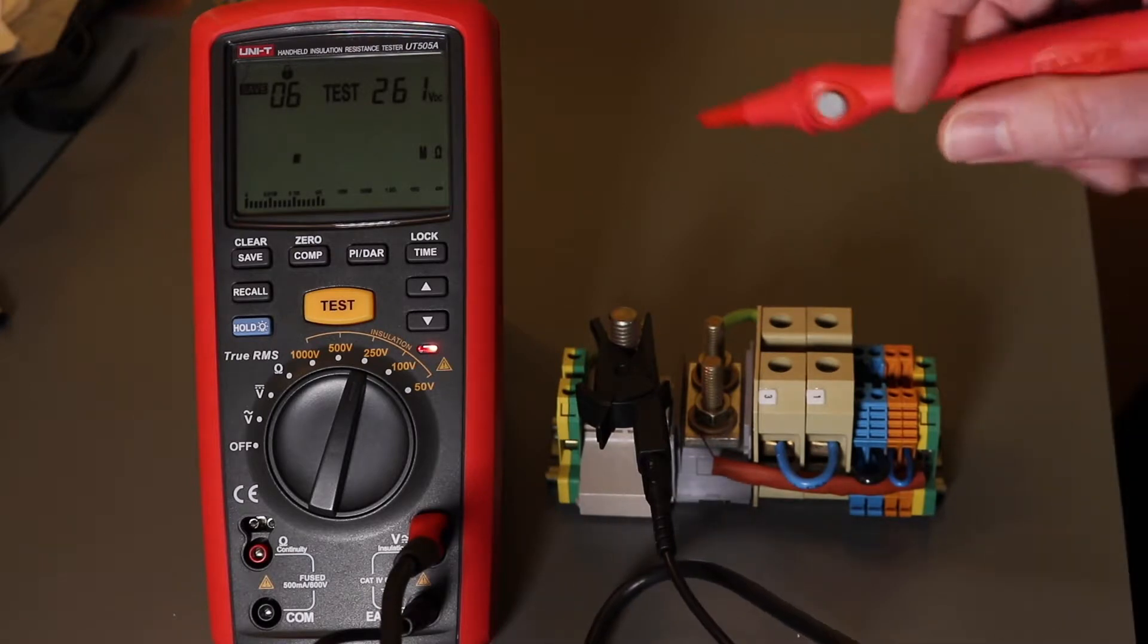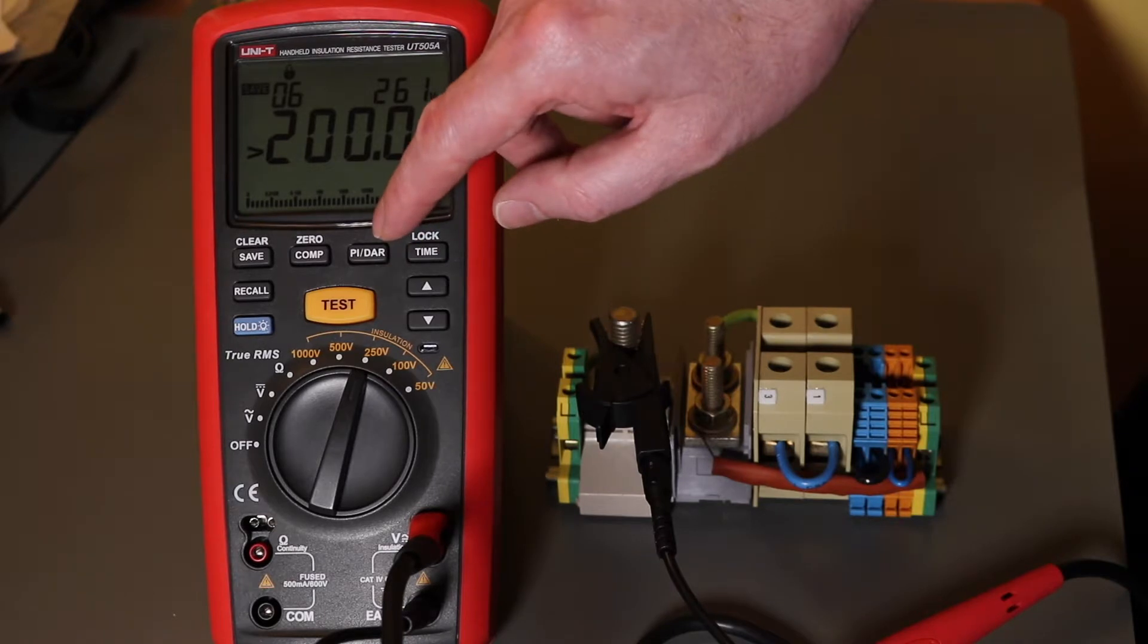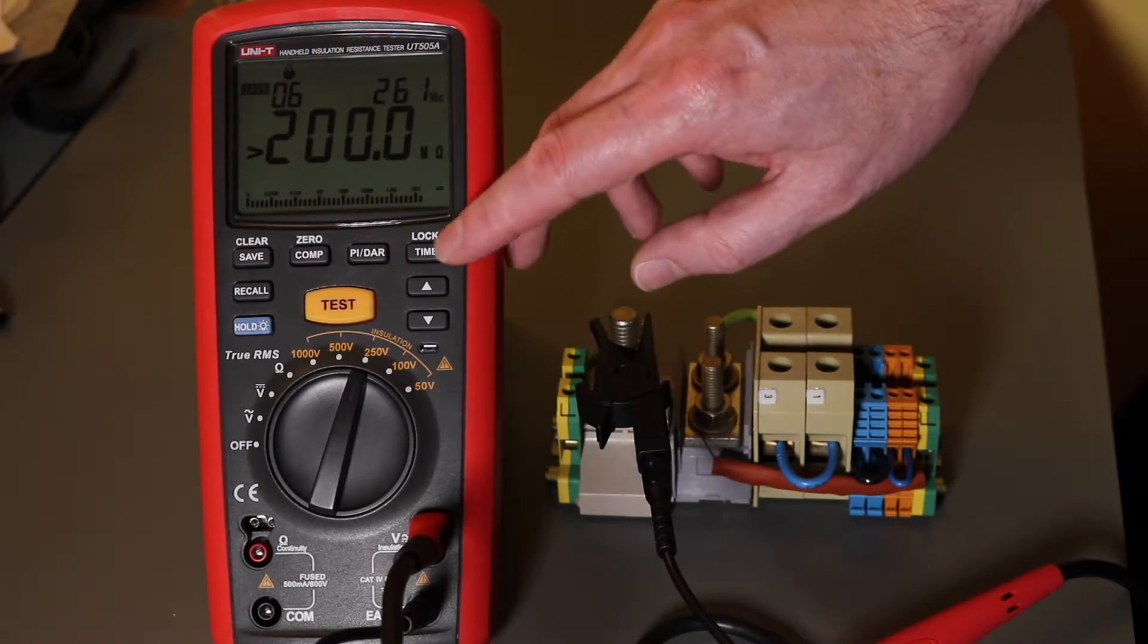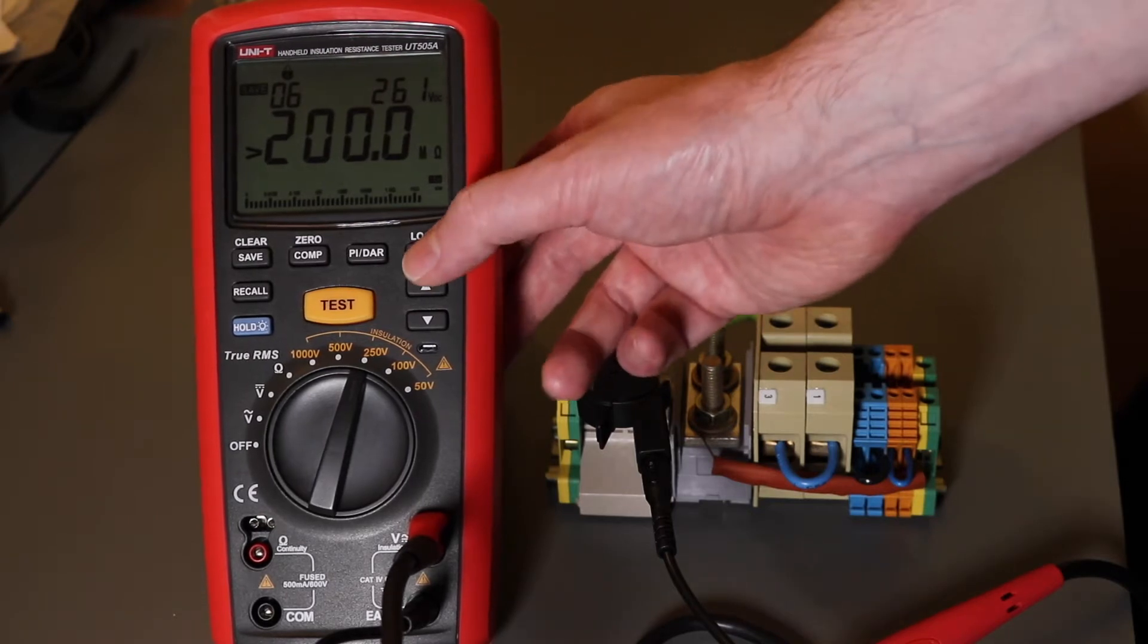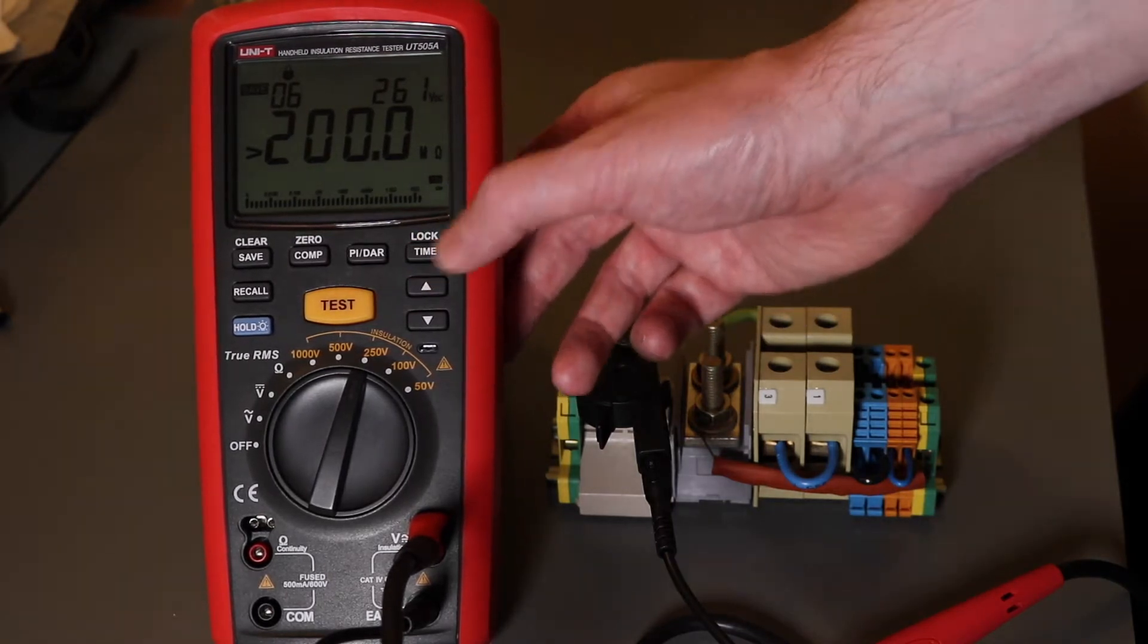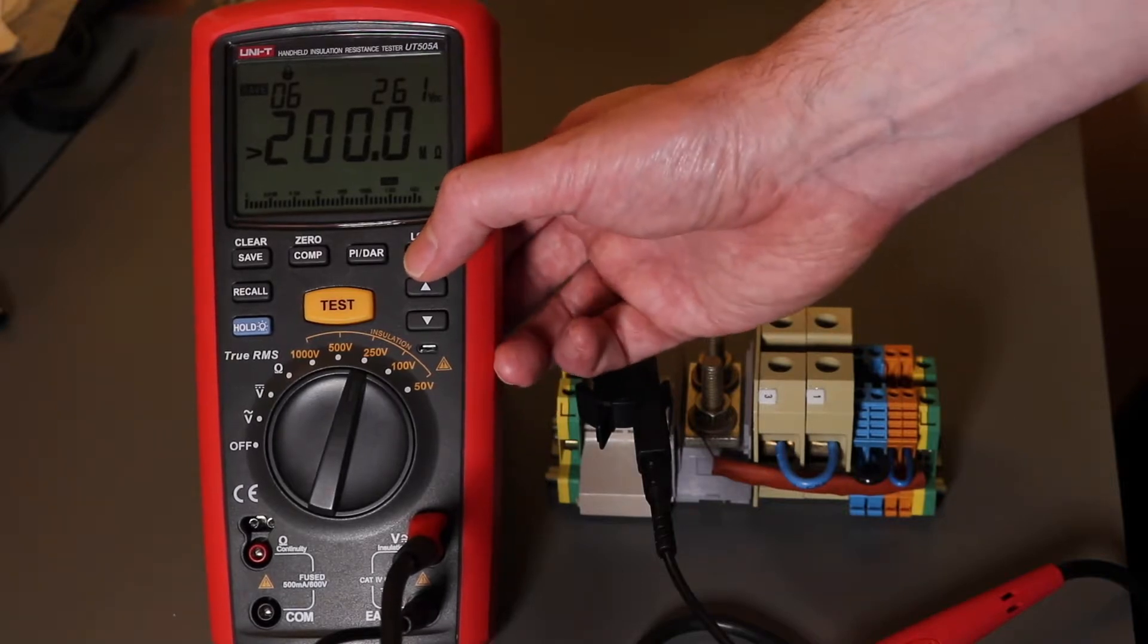I let go and you see the beeping goes. Okay so you have a time function and a PI and DAR function on this instrument. You press the time function and you'll see here it goes through various ranges. A single 15 second, 30 second or a 1 minute test.